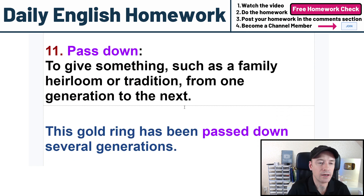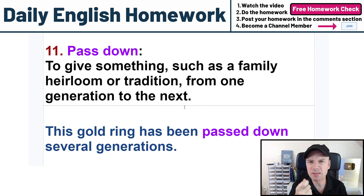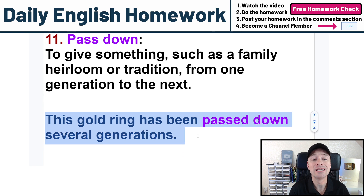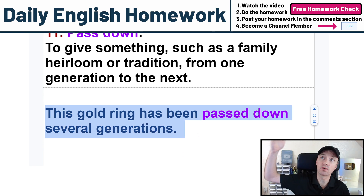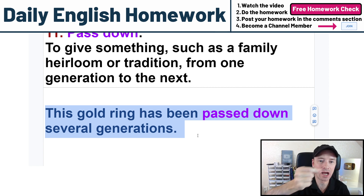Number eleven: passed down — to give something such as a family heirloom or tradition from one generation to the next. A heirloom is a very special item that has been in your family for many generations, usually jewelry. My example sentence: this gold ring has been passed down several generations. Maybe my great-great-great-grandmother passed it down to my great-great-grandmother, who passed it down to my great-grandmother, who passed it down to my mother, who passed it down to me. That ring is an heirloom — very special for our family.